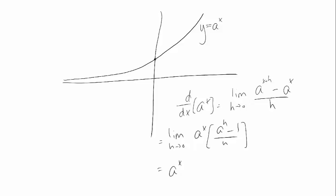So now what I have is my original function times some limit that doesn't have an x in it. And so this limit is just going to be some constant number depending on h.